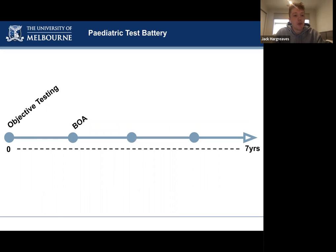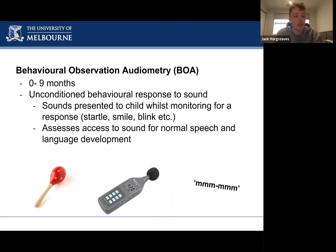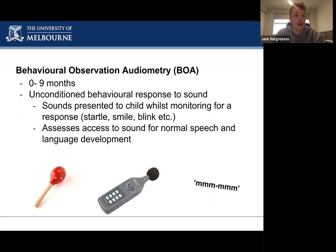The next test is behavioral observation audiometry, or BOA, typically used for children aged zero to nine months when objective testing isn't available. BOA is an assessment of unconditioned behavioral responses to sound. The child usually sits on the parent's lap while we present sounds across the frequency range and watch for any response. Sounds used include a Manchester rattle, typically in the 8 to 16 kilohertz region, and sounds made by the audiologist covering 160 to 1200 hertz. We monitor intensity with a sound level meter and look for responses like smiling, blinking, or a startle.